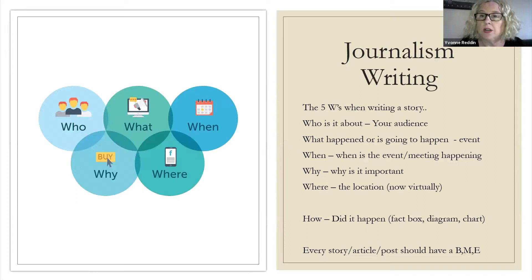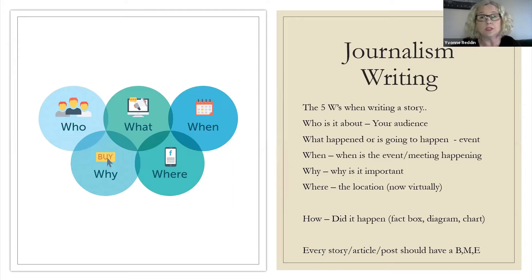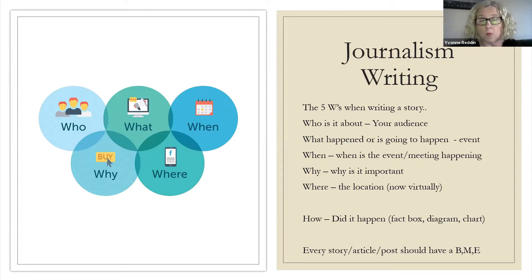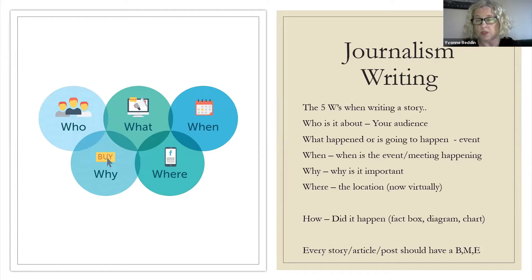In journalism, when you're learning to write, you are taught to write a story using the five W's. Using the five W's gives your story structure and the framework to write the story or article the right way. The five W's are: who, what, when, why, and where. You can use this in an article, a post, or a social media post.